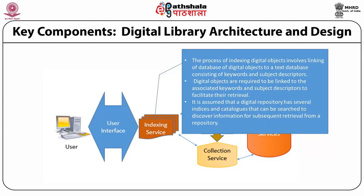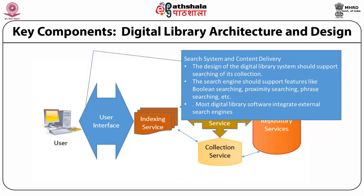The process of indexing digital objects involves linking of databases of digital objects to a text database consisting of keywords and subject descriptors. Digital objects are required to be linked to associated keywords and subject descriptors to facilitate their retrieval. It is assumed that a digital repository has several indices and catalogues that can be searched to discover information for subsequent retrieval. The search system and content delivery: the design of the digital library system should support searching of its collection. The search engine should support features like Boolean searching, proximity searching, phrase searching, etc. Most digital library software integrates external search engines.